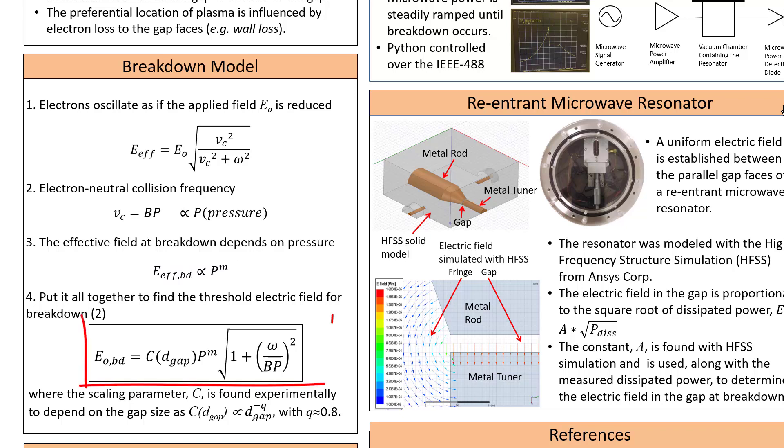You get the model equation for the threshold electric field at breakdown as a function of 2 pi times the frequency and the fit parameters b, m, and a scaling constant c, which depends on the gap size on account of the fact that breakdown can occur in the fringing electric fields.